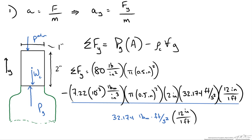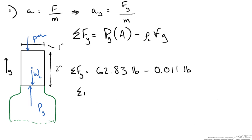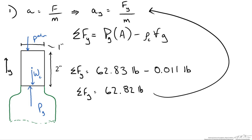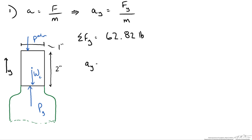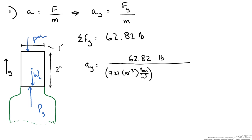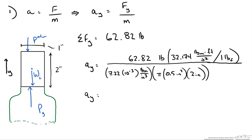Now that all unit conversions are correct, we can simplify. The sum of forces in the y direction is really not dependent on the weight of the cork since it is so small. Our final answer is 62.82 pounds force. We use this in our acceleration calculation, dividing by the mass of the cork — density times volume — applying the lbf-to-lbm conversion factor. The acceleration in the y direction is 178,000 feet per second squared, which is a very high acceleration.